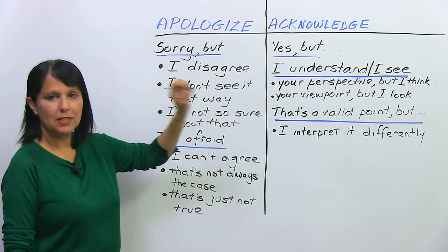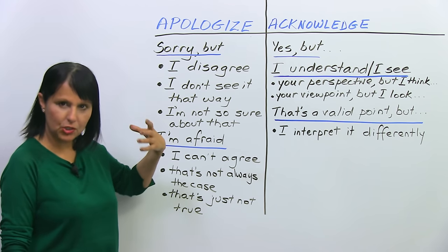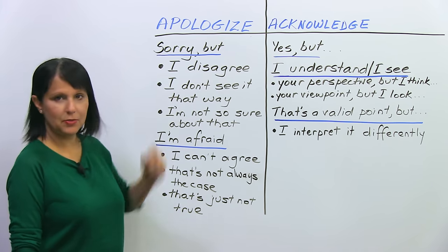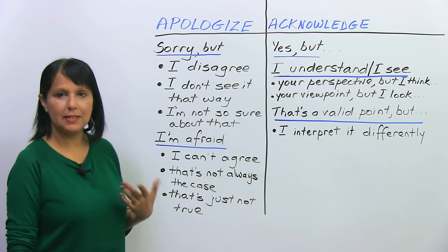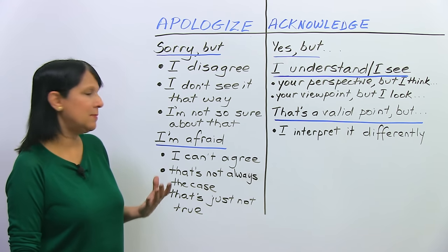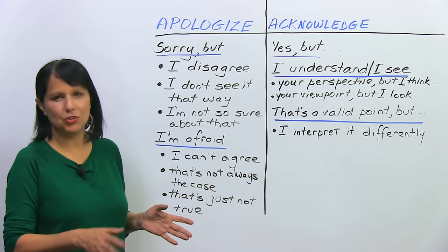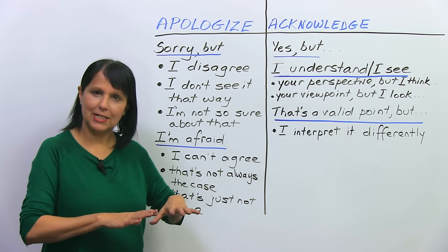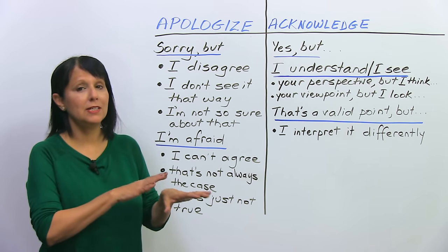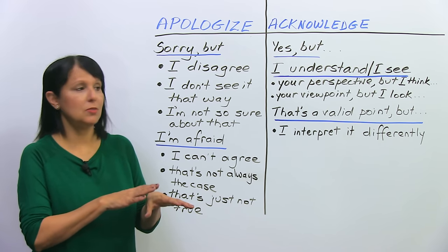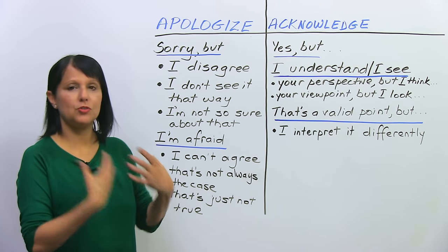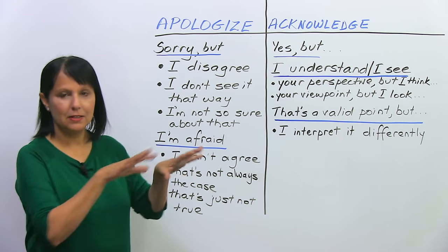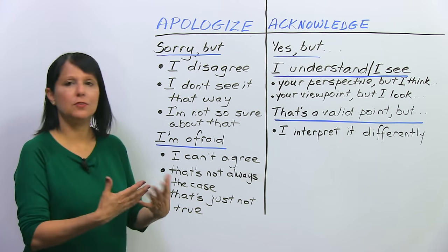There are two ways: apologize and acknowledge. When we apologize and state our opinion, we could start like this: 'Sorry, but I disagree.' 'Sorry, but I don't see it that way.' 'Sorry, but I'm not so sure about that.' You're not sure — you don't agree at all — but you don't say it so forcefully because in English we usually disagree politely and a little bit gently. That's why we're learning these diplomatic expressions, so that you fit into that culture.